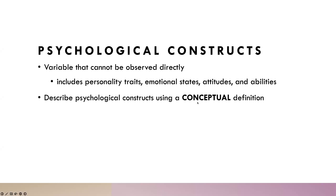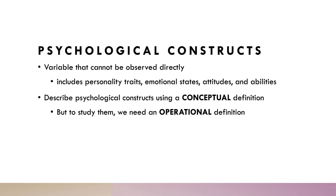Our next step is we need to choose a construct and give it a conceptual definition. A concept is just the way that we think about something. You could talk about happiness as feeling good, positive, and optimistic. Whatever you decided as the researcher, you choose the conceptual definition of what you're measuring. This conceptual definition gives us information on what we're studying, but to actually study it, we need to operationalize it so that we can measure it in some way.